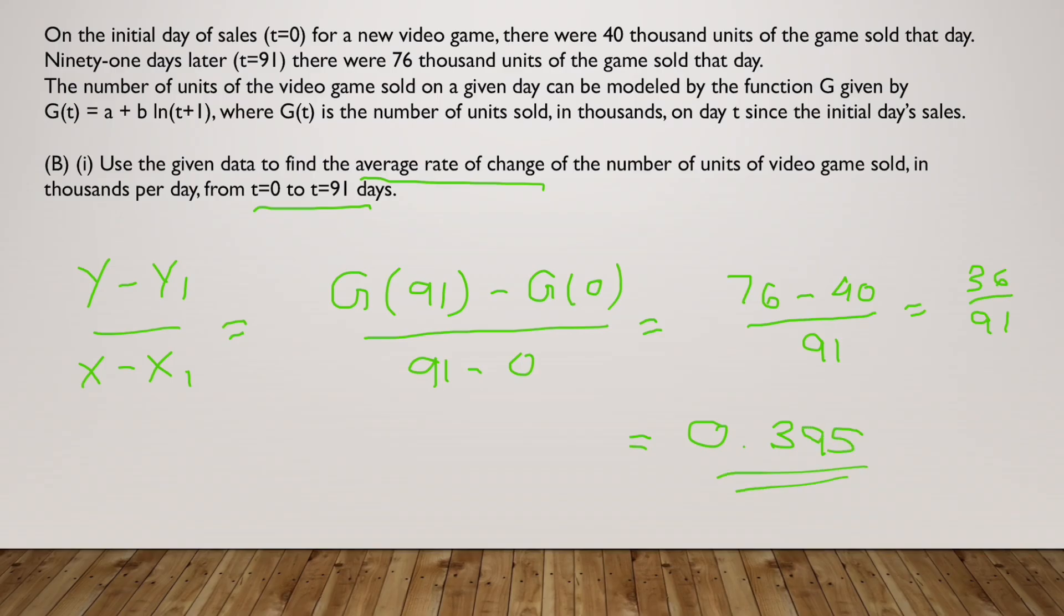Which, if I put in a calculator, evaluates to 0.395. So you'll write that the average rate of change of number of units of video game sold in thousands per day from t equals 0 to 91 is 0.395, or you could just write that the average rate of change is 0.395 thousand units per day. That was a very simple question.